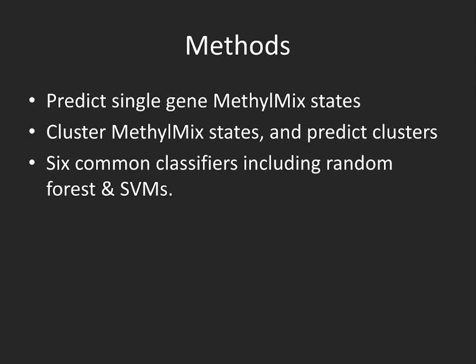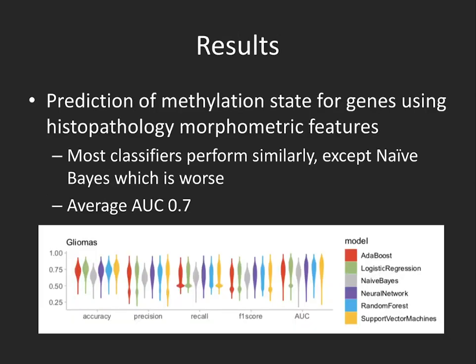We wanted to see if we could predict these methylation states from morphometric features. First, we tried to predict single genes, followed by clustering of MethylMix states and predicting clusters. We used six common classifiers, including random forest and SVMs. These are the results for gliomas for single genes, where most classifiers can predict these genes with an AUC of about 0.7. Essentially only Naive Bayes is not performing well, but most other classifiers can quite reasonably predict the methylation states using these morphometric features.